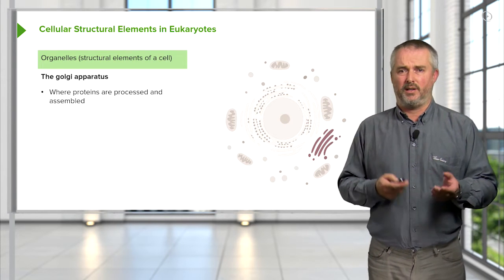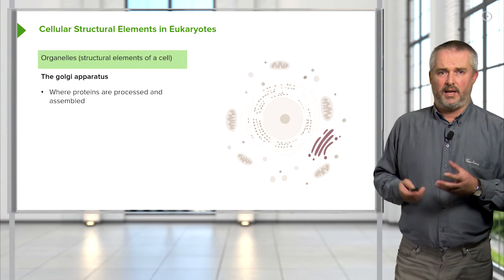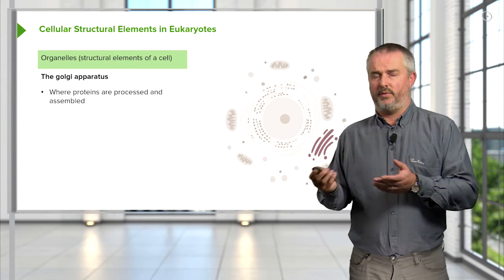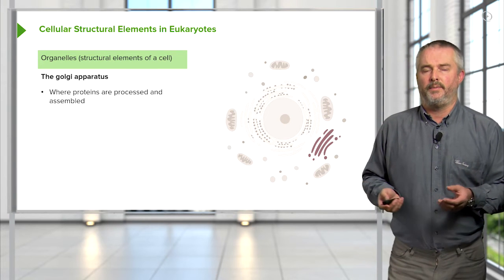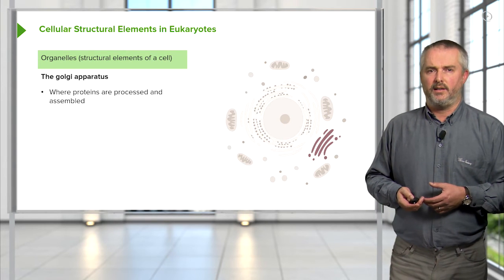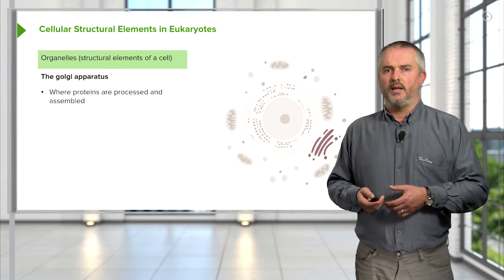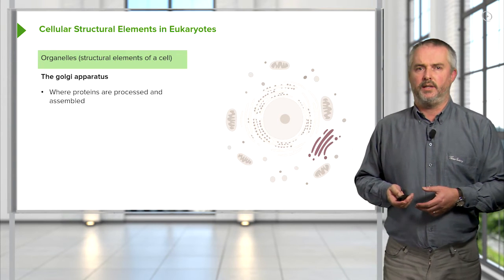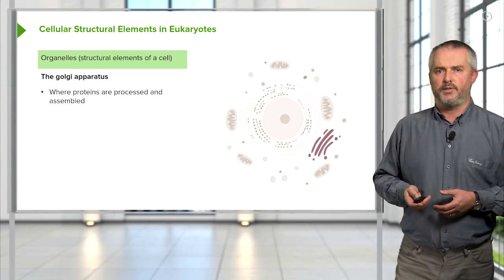The final protein product comes off in vesicles at the end of the Golgi. It may go and be secreted out of the cell. For example, if it's mucus, it might be secreted in the lining of the lungs or the intestine. Hemoglobin may be secreted within a liver cell where it's being produced, or it might go within the cell if it's going to fuse to form a lysosome.